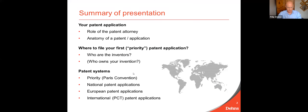This slide gives a summary of what I want to talk about today. The patenting process starts with the patent attorney who converts your invention into words in a patent application — and I will just recap on what is a patent application. Before you can consider filing your first patent applications you need to determine who the inventors are and who the owners are, and that's vitally important. I'll then talk about the various systems for getting patents granted around the world.